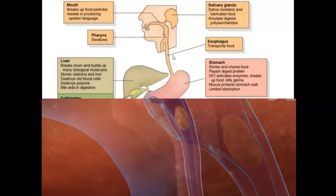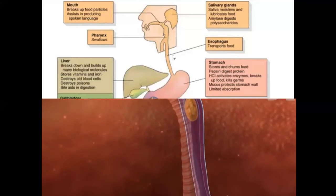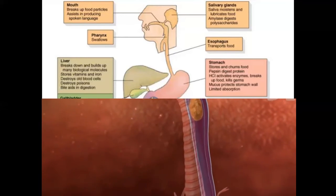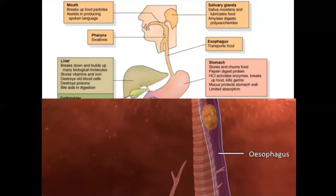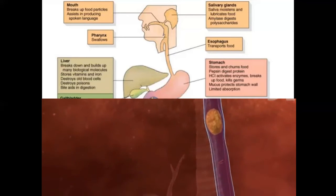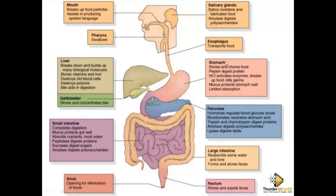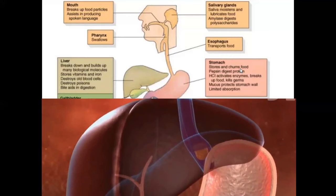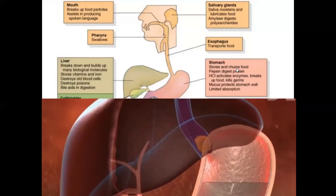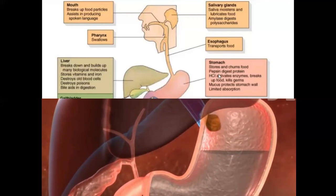We'll look in detail at how the oesophagus brings about the movement of food into the stomach. Even if you're upside down, the food will still go to the stomach. Then you have the stomach — the stomach is very important. It breaks down the food and makes it into chyme.